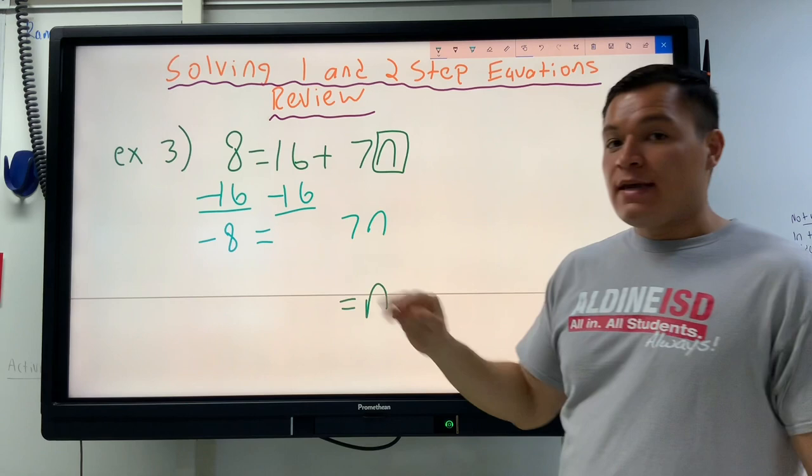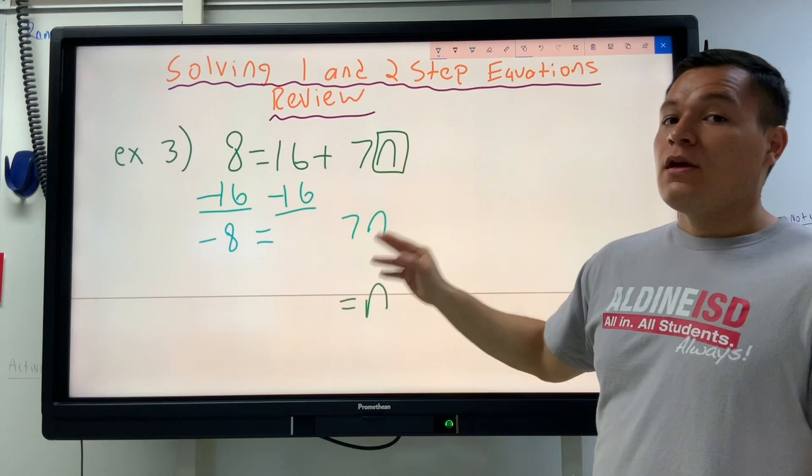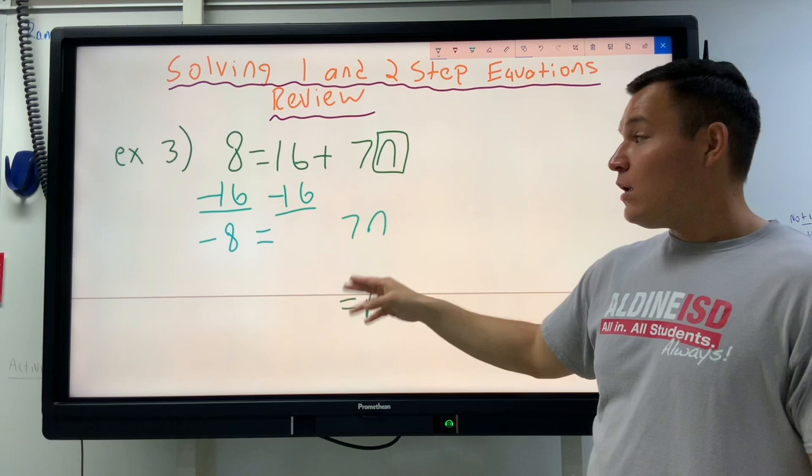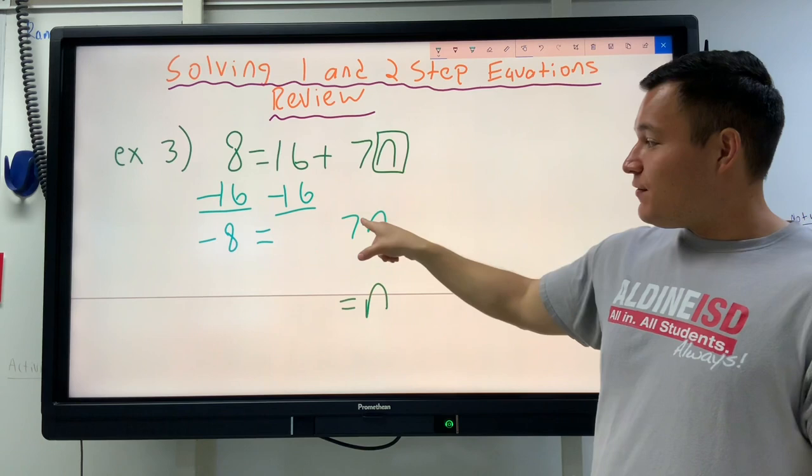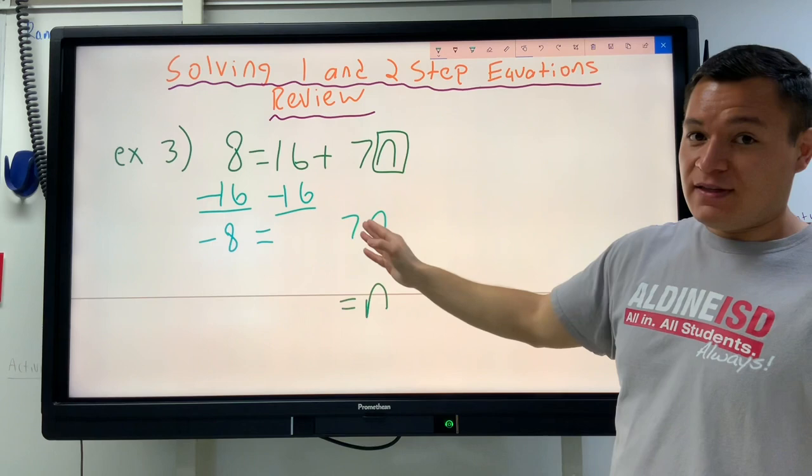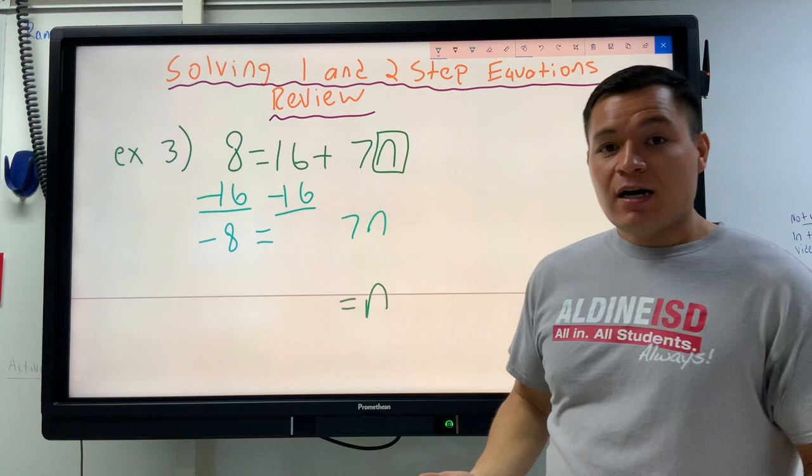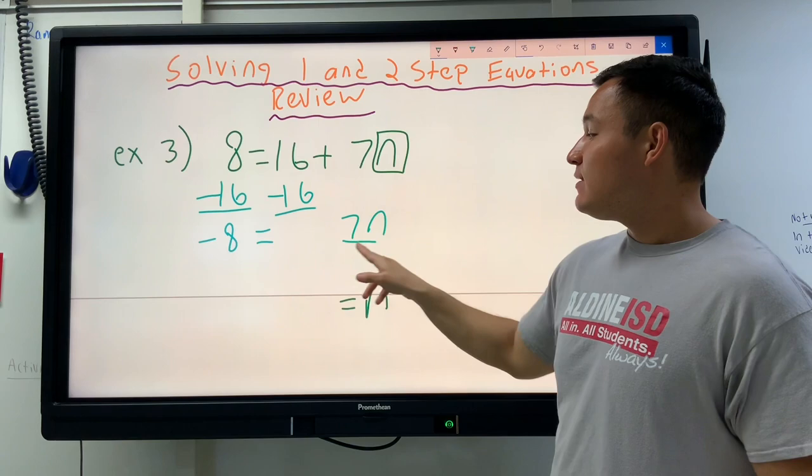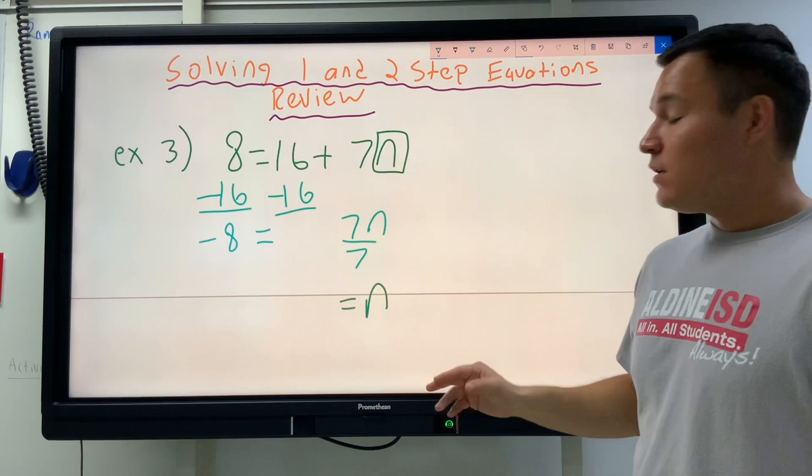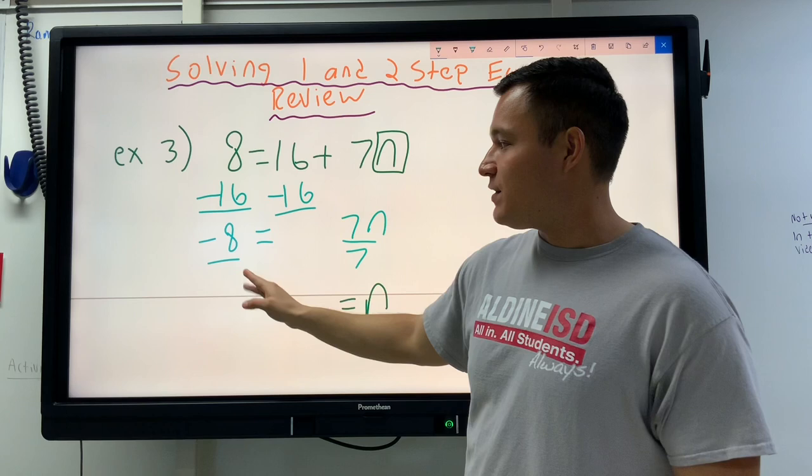Negative 8 is equal to 7N. Let's just read it one more time. Negative 8 is equal to 7N, and do you know what it means whenever you have a number touching a letter? When that number touches that letter, it means that they are multiplying. Whenever you have a little dot in between two things, that means that they're multiplying. Whenever you don't have anything between these two things, that also means that they're multiplying because they're touching. This is 7 times N. What would be the opposite of doing 7 times N? The opposite of multiplying is dividing, and the easiest way to divide when we're doing equations is with a fraction bar. If I divide by 7 on the right side, on the other side of this equal sign, I also need to divide everything by 7.